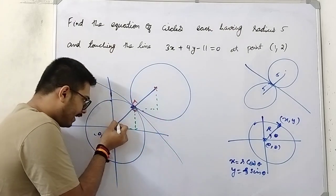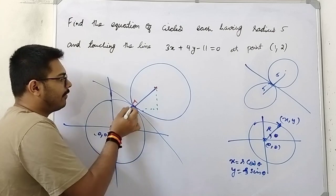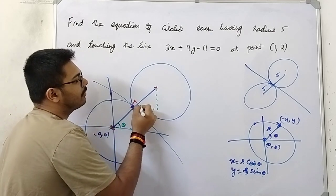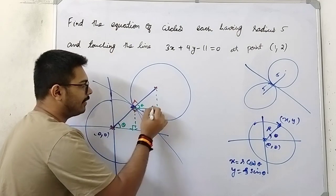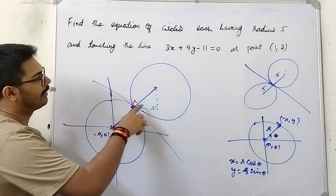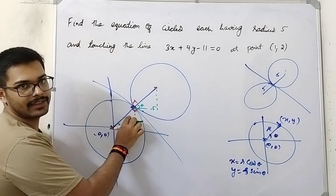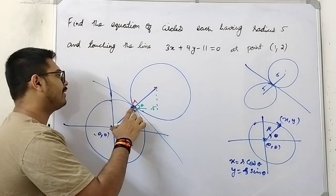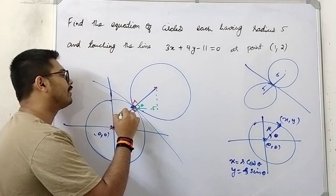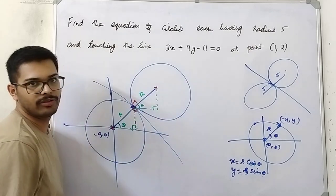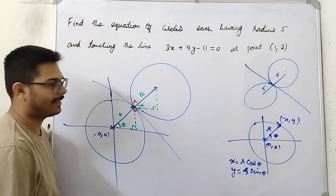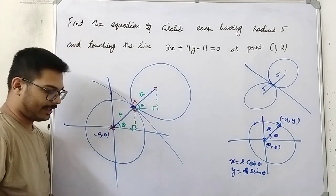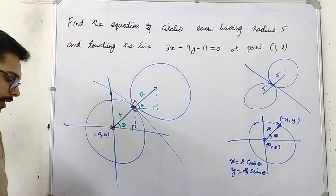If this angle is theta — the inclination of this radius with the x-axis is theta — then this angle will also be theta. Since both these angles are 90 degrees, this angle will be (90 − θ) and this angle will also be (90 − θ). Since this radius is r units, this is also r units, because both circles have the same radius. This means these two triangles are identical — they are congruent.